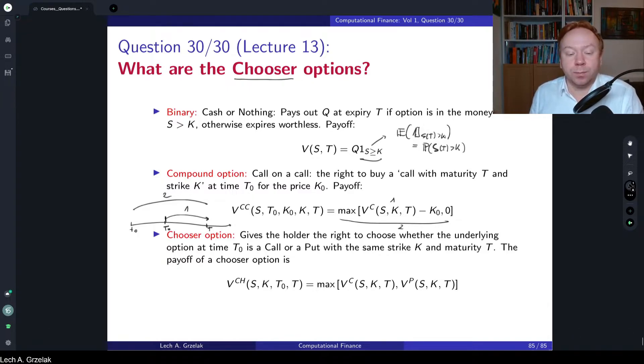And chooser option is for a client that is not decided whether he would like to invest in call or put. This is very similar to this case. However, here instead of strike K0, we would have another option. So we have option on choice between two different options, either call or put. Again, as before, we have time t0, capital time T0, and time T. At time t0, this is today, and the client would have option at time T0 to decide whether he would like to go for a call or a put option.